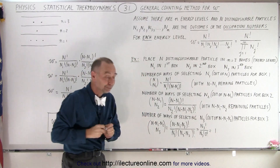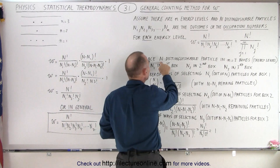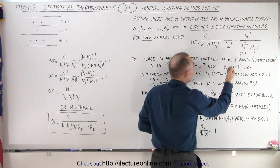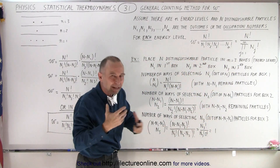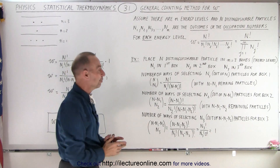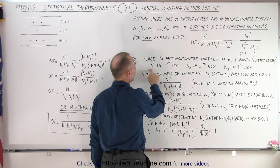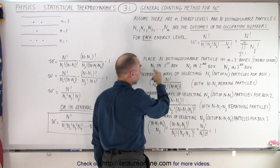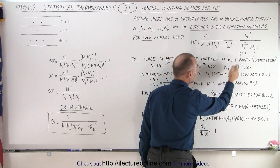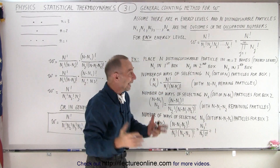Now let's do an example. Let's say that we have N distinguishable particles and three boxes or three energy levels, then we'll expand that to the general format of the equation. We'll have n1 number of particles in the first box, n2 in the second box, and n3 in the third box. n1 plus n2 plus n3 add up to the total number N.